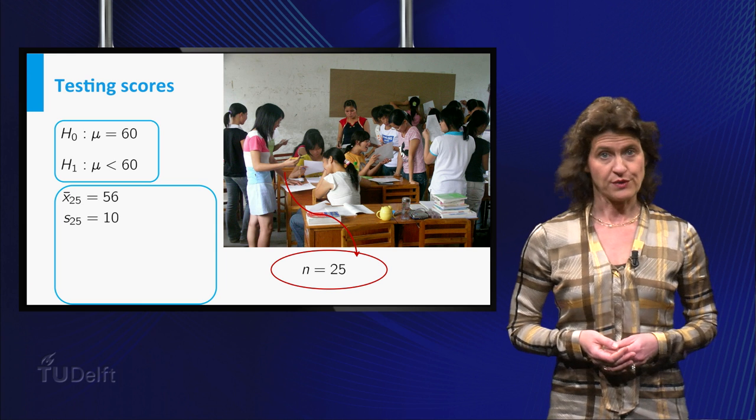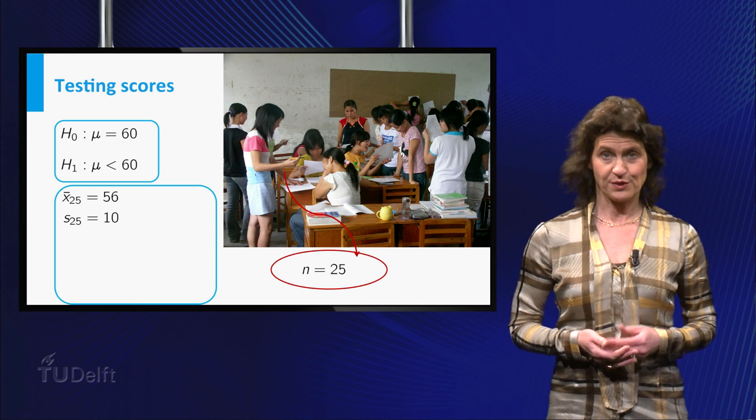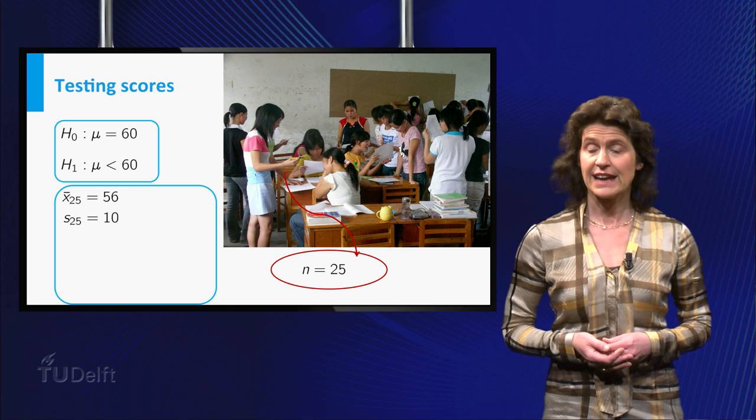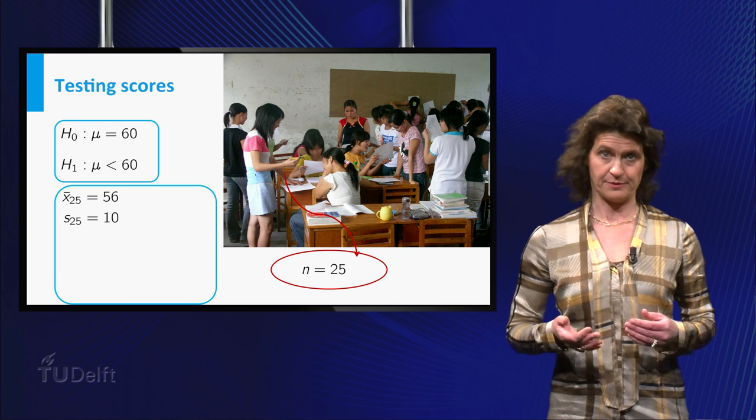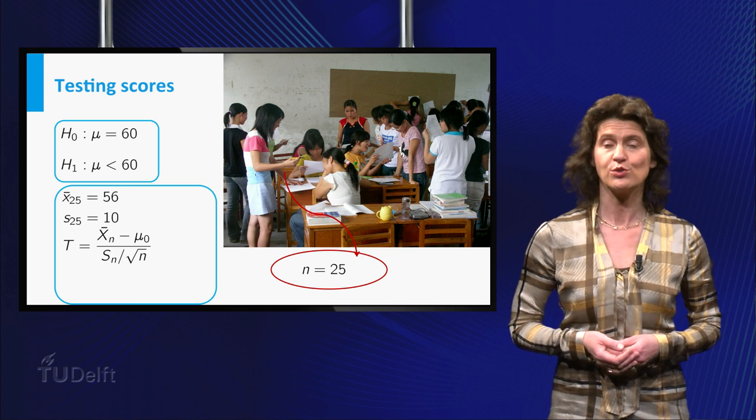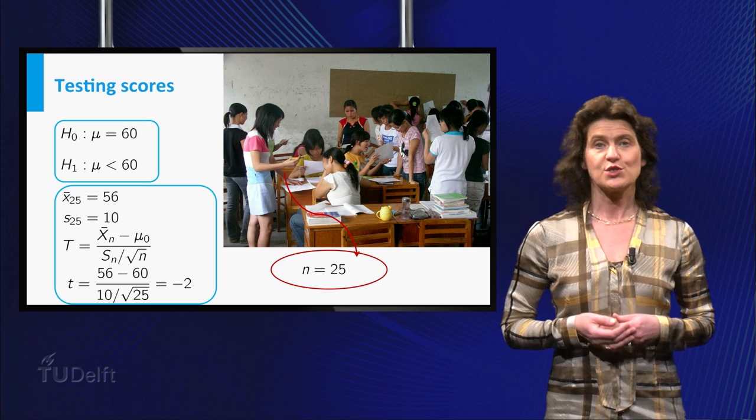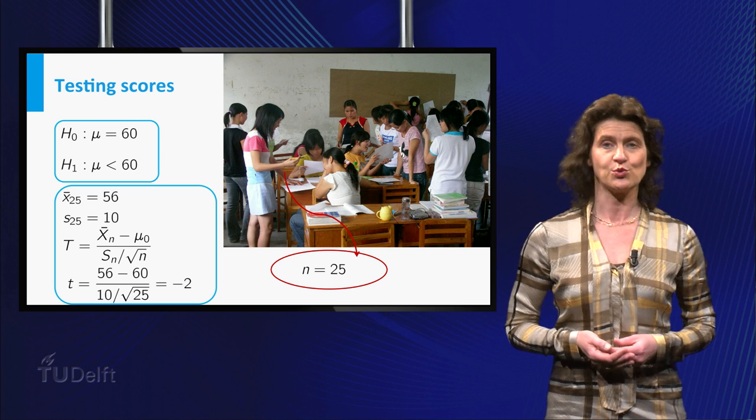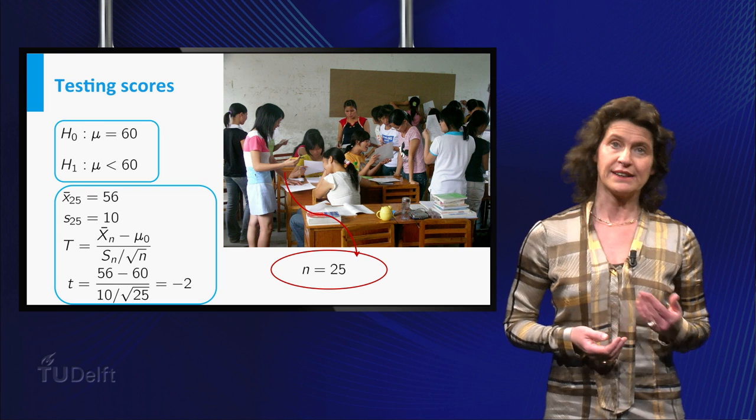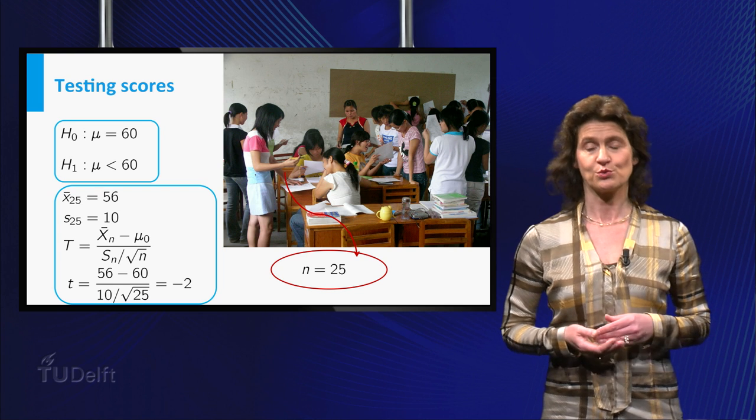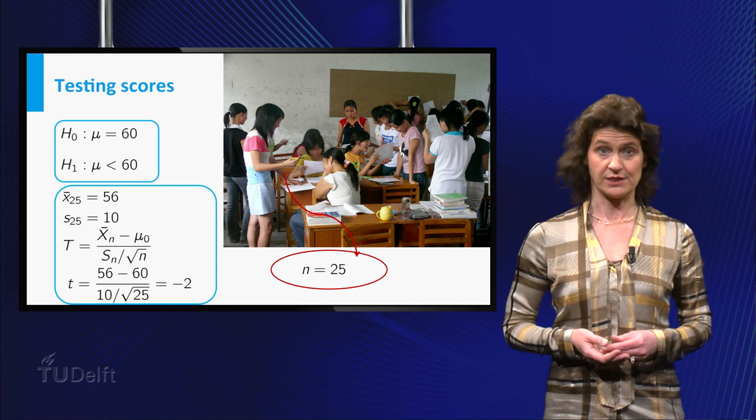The mean score of the 25 students is equal to 56. The sample standard deviation turns out to be 10. So the value of t is small t which is equal to 56 minus 60 divided by 10 divided by the square root of 25 which is minus 2.